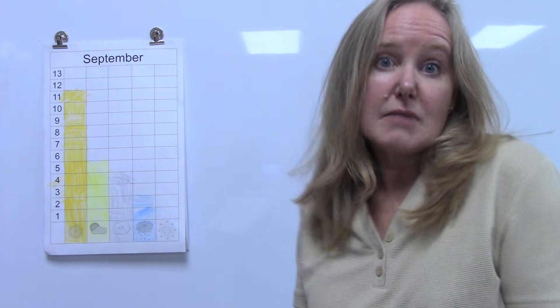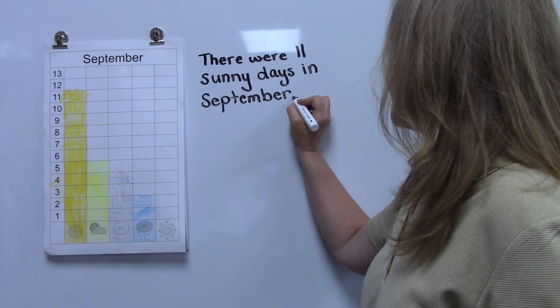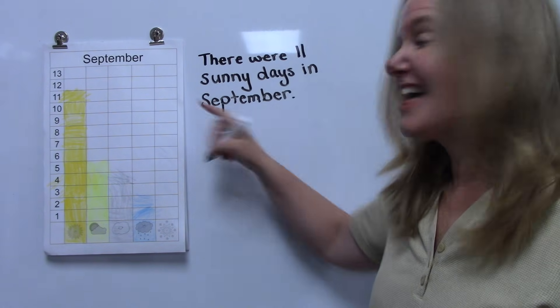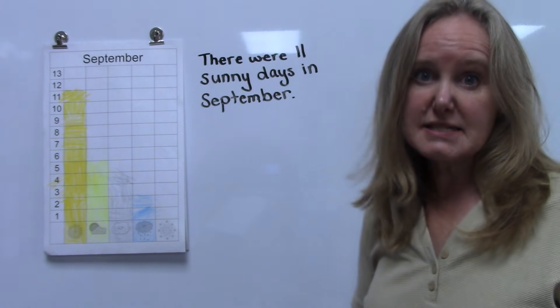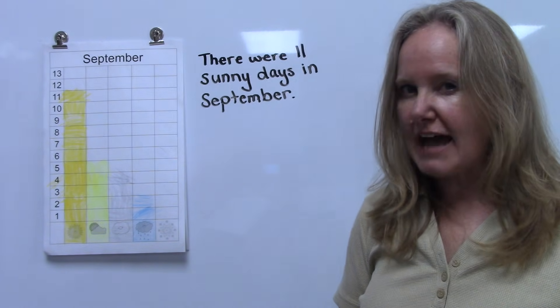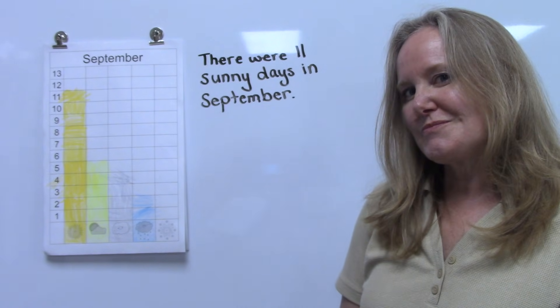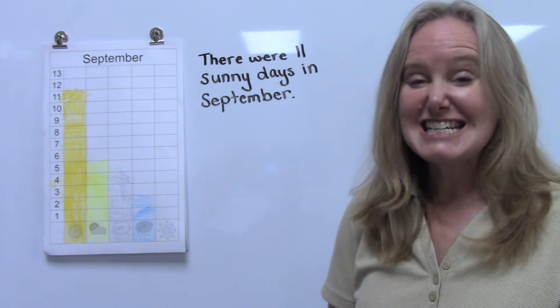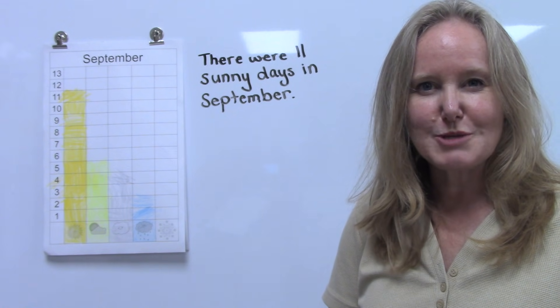How many sunny days were there in this month of September? There were 11, and we could write that down. I have written: there were 11 sunny days in September. That's an observation, or a fact, that I could learn from observing the graph.